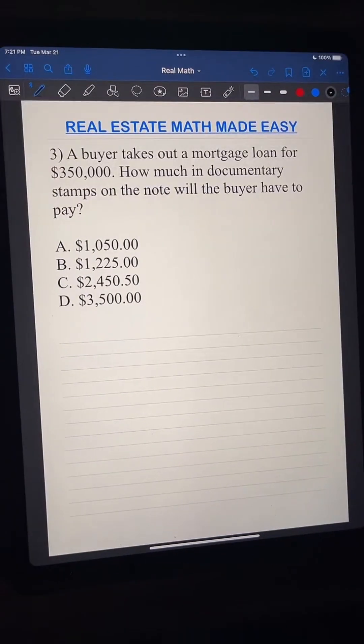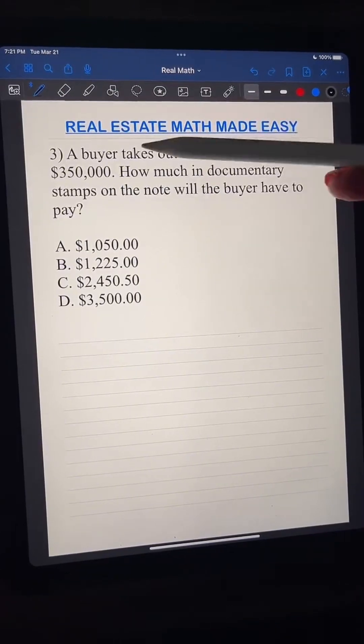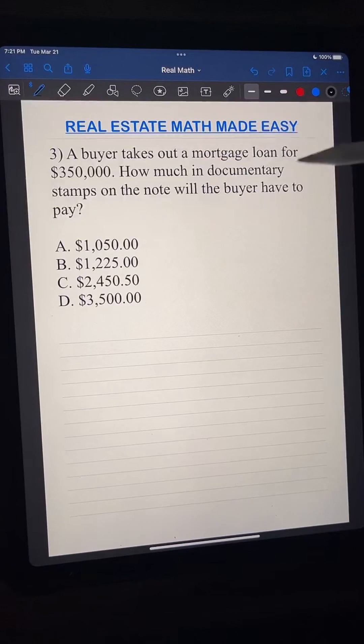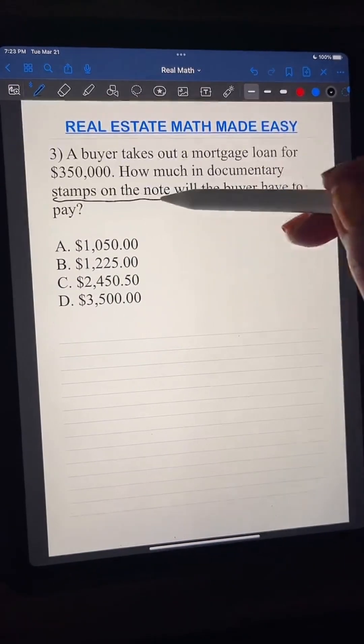All right, so here we have another question. It says a buyer takes out a mortgage loan for $350,000. How much in documentary stamps on the note will the buyer have to pay? So this is stamps on the note.